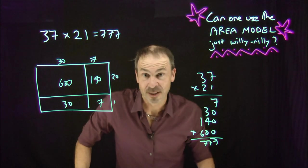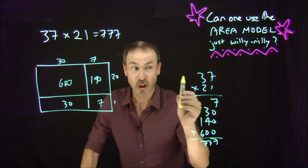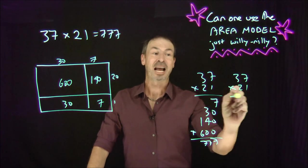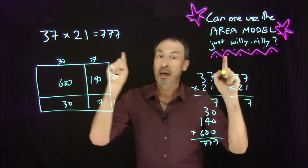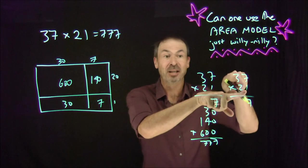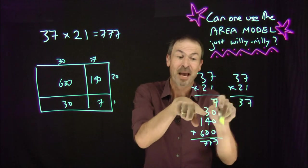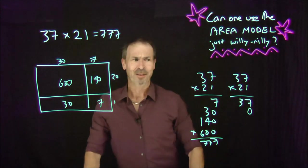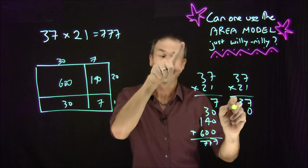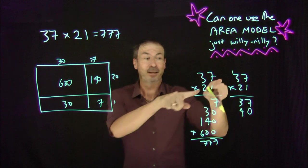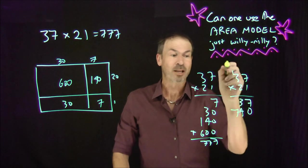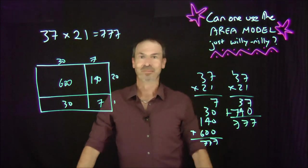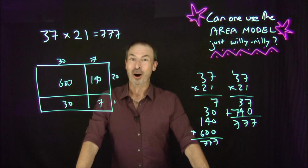But apparently we still live in a society where ink is precious, and that used up too much ink. So we actually teach kids to do this still to this day: 1 times 7 is 7, but 1 times 30 — just put the 3 up there, don't repeat a zero. Then write a zero, go 2 times 7 is 14, write a 4 and put a 1 up there, then 2 times 3 is 6 plus 1 is 7. Add those up: 777. That's crazy!